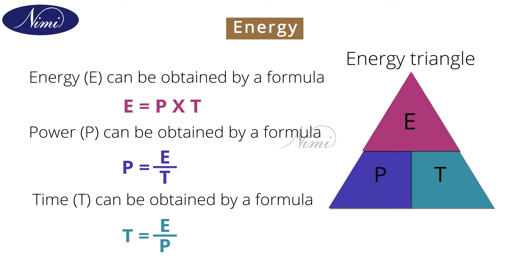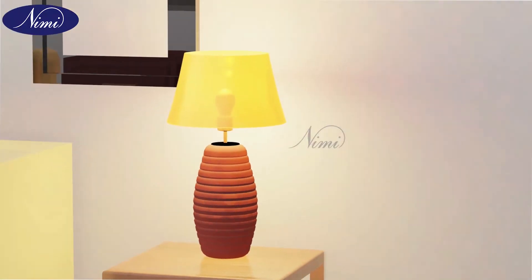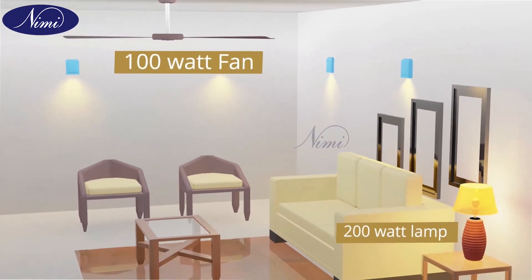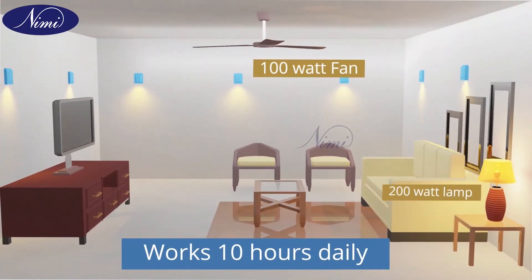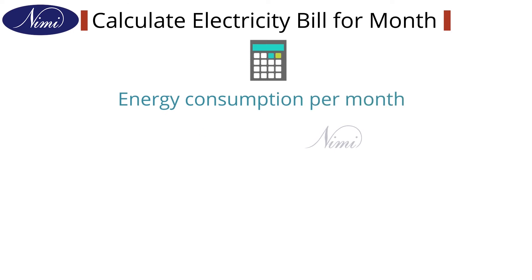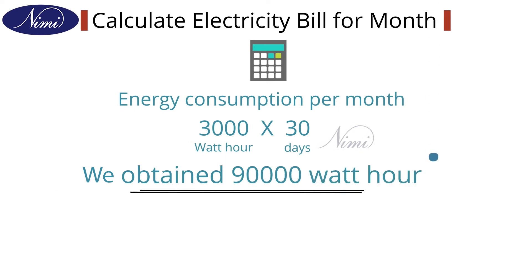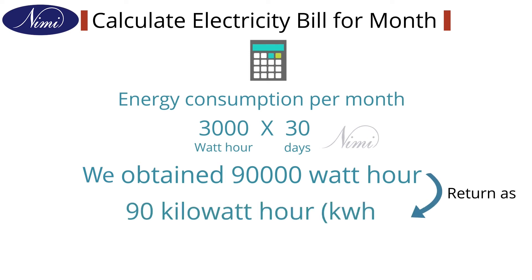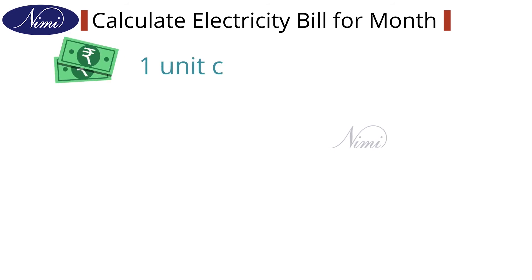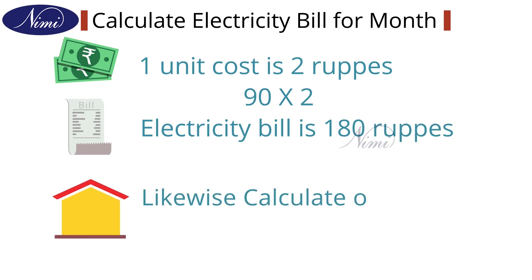Let us move on to the calculation part. We are going to see how electricity bill is calculated. Let us assume a 200 watt lamp and a 100 watt fan work 10 hours daily. For this load assumption, we are going to calculate the electricity bill for a month. To calculate energy consumption per month, 3000 watt-hours is multiplied by 30 days, giving us 90,000 watt-hours, which equals 90 kilowatt-hours or 90 units. If the cost of one unit is 2 rupees, then we have to pay 180 rupees as the electricity bill. Likewise, we can calculate our domestic electricity bill.